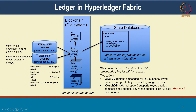On top of the state database there are a few indices that are created. One is a history index which says which transaction is in which block and a history of all such transactions over time, and there is also a block index. All these indexes are stored on the state database in LevelDB for Fabric. For the state database itself there are two options. Hyperledger Fabric gives you a pluggable interface for your database definition.